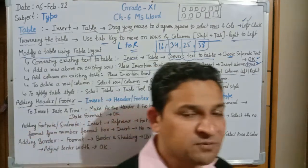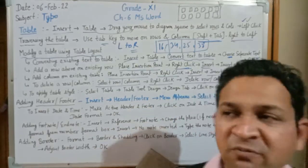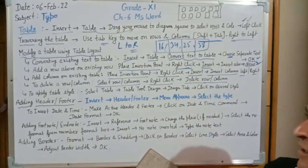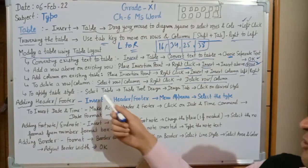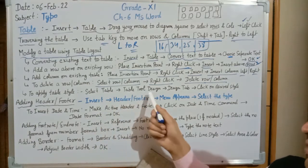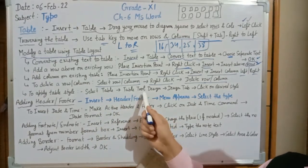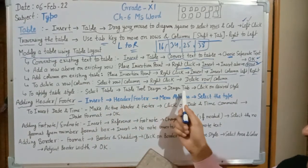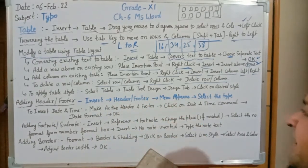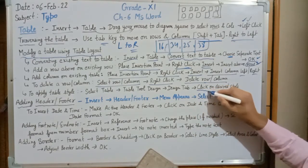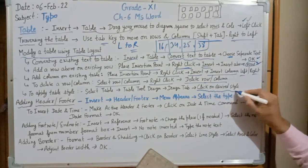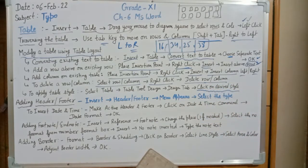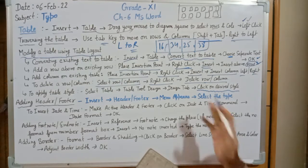To apply a table style, we can apply different types of styles using the Design tab. First select the table, then go to the Table Tools Design option. In the Design tab, click on the desired style you want to apply by pressing the left mouse button and it will be applied.